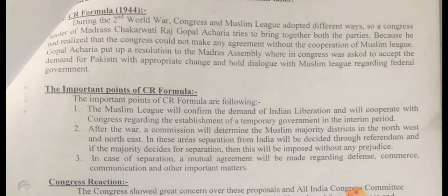The important points of CR formula: First, he told the Muslim League to confirm that they want India's independence, and after that they must cooperate with the Congress regarding the establishment of a temporary government during the interim period. When the war ended, a commission would determine the Muslim-majority districts in the North-East and North-Western zones of the subcontinent. After that, a referendum would be held to know the view of the majority of the Muslims, and the decision of the majority would be imposed without any prejudice.